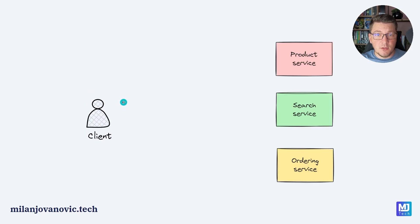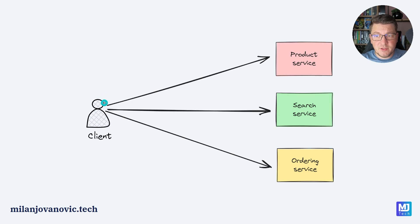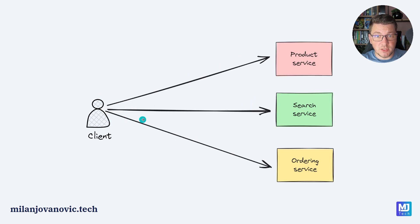Let's illustrate this with an example where we have a client trying to communicate with three microservices. A client could also be another microservice inside of our system. Let's say we have a product service, a search service, and an ordering service. Our client wants to communicate with all of these services individually, and in order to achieve this, the client needs to know the physical address where each service is deployed.